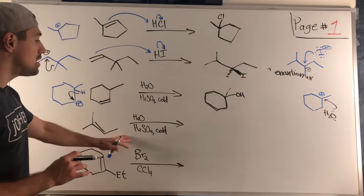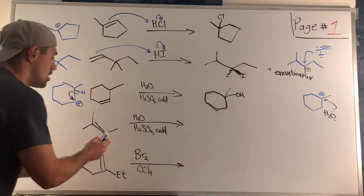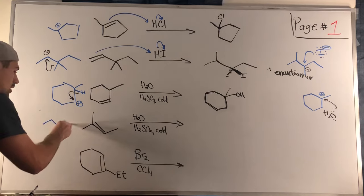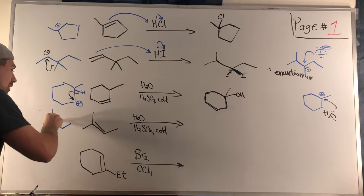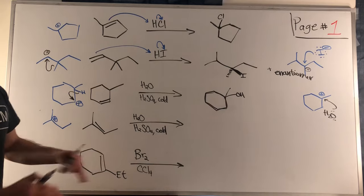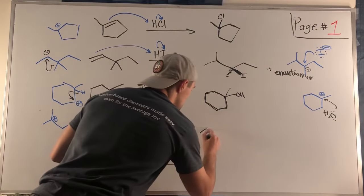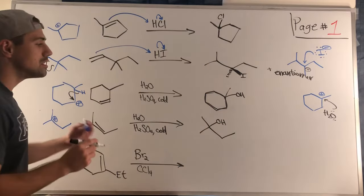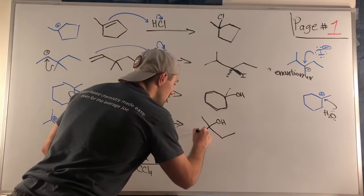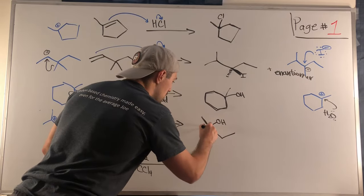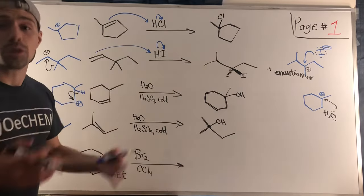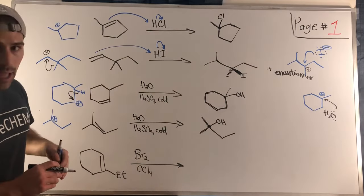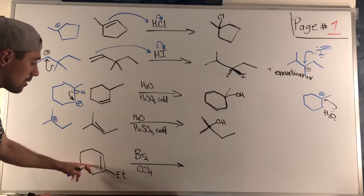Moving on to reaction four — we can make a tertiary carbocation here, and this is finally a situation where no shifts happen. We just need to attach the OH on that tertiary carbocation. We don't have to reflect stereochemistry because this carbon is not a stereocenter — we are attached to two methyl groups, so there are not four unique groups on that carbon. Just get the regiochemistry correct.